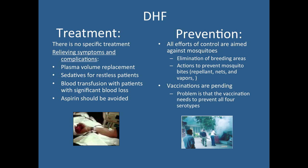As of now, there is no treatment for dengue fever or dengue hemorrhagic fever, and no vaccine is currently available. Some vaccines are in large-scale testing in several countries, but none have passed phase three trials. Available treatments are focused on relieving symptoms and complications: plasma replacement for hemorrhagic fever, sedatives, blood transfusions, and aspirin or painkillers for managing pain.